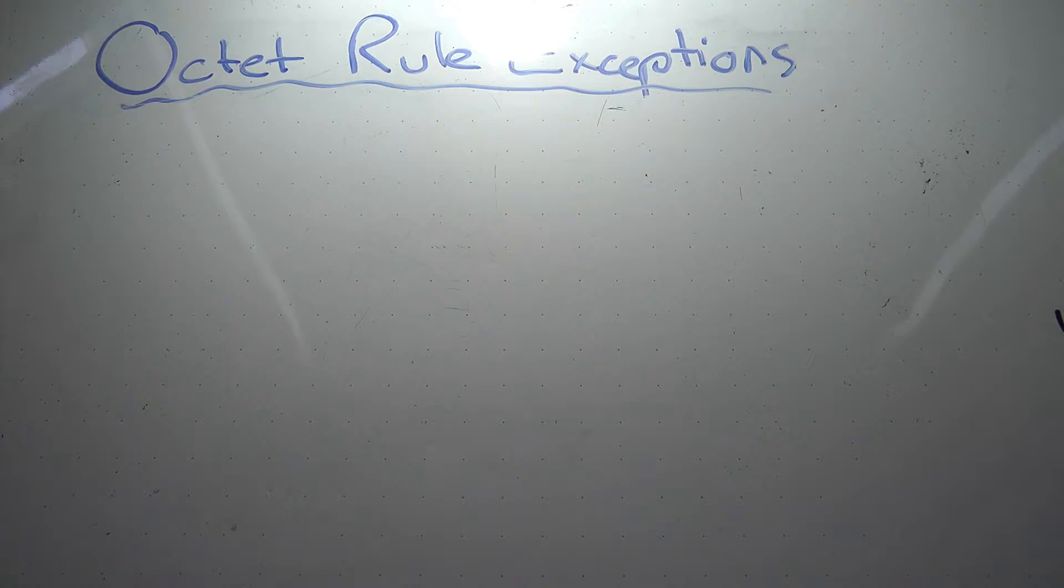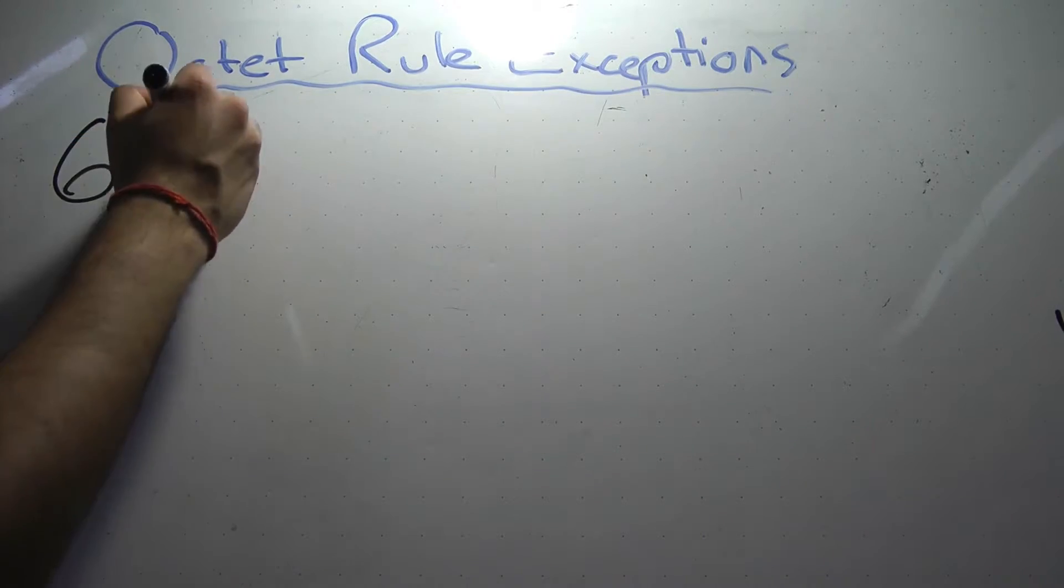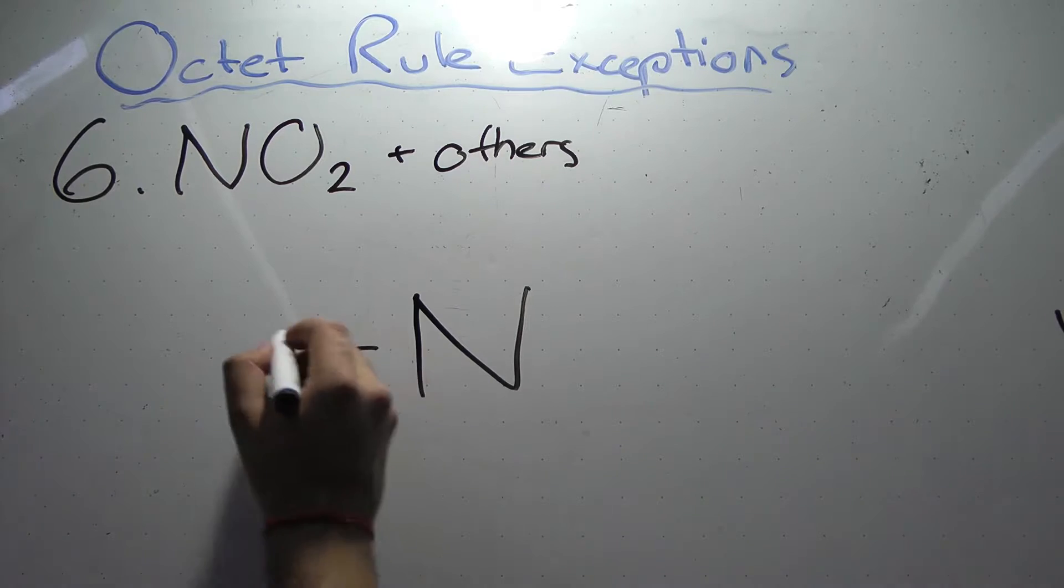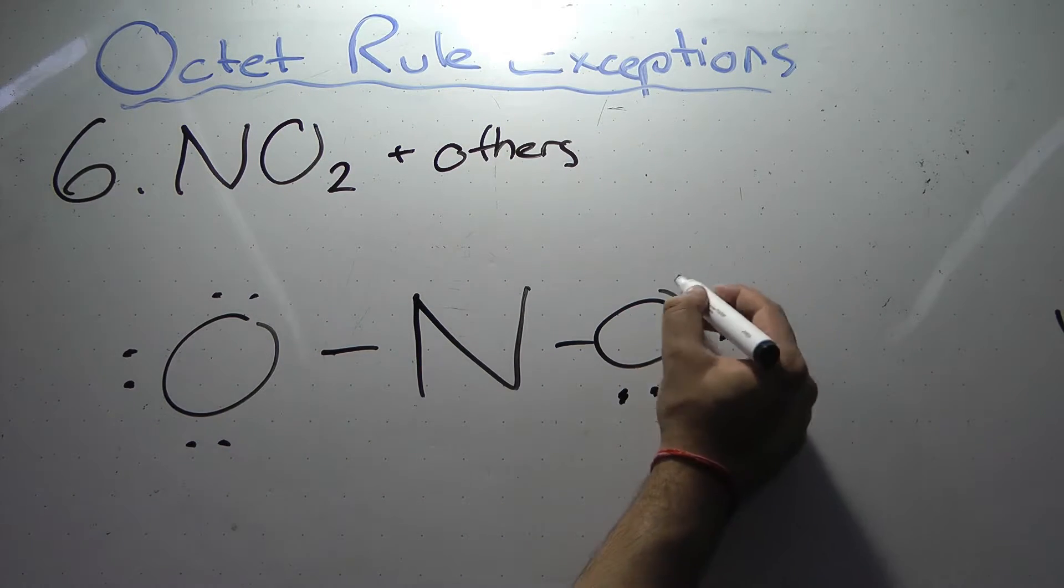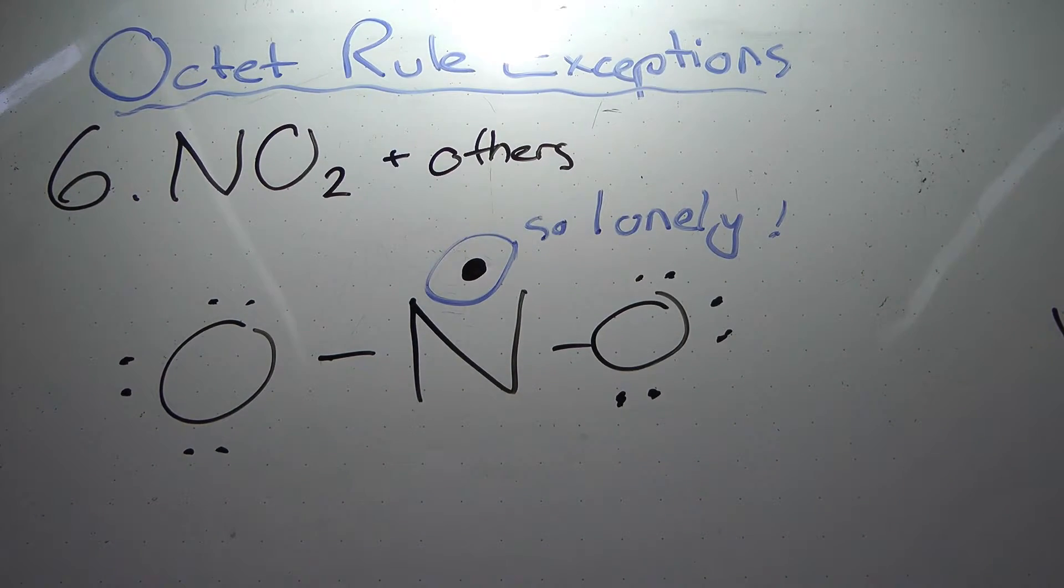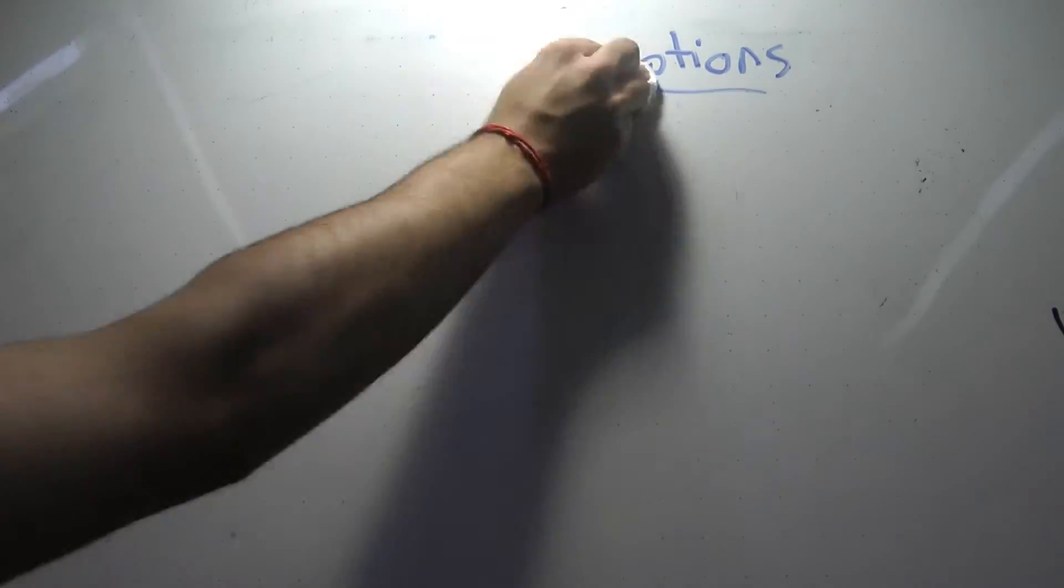The sixth rule is some atoms, ions, or molecules have orbitals containing a single unpaired electron. These are called paramagnetic because the unpaired electrons are affected by a magnetic field. Paramagnetic substances have an odd number of valence electrons, so no matter how hard you try, your Lewis structure will always show an unpaired electron. We can see this in nitrogen dioxide.